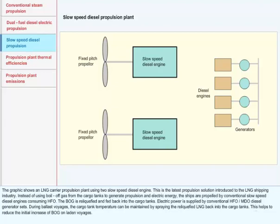Electric power is supplied by conventional HFO or MDO diesel generator sets. During ballast voyages, the cargo tank temperature can be maintained by spraying the reliquified LNG back into the cargo tanks. This helps to reduce the initial increase of BOG on laden voyages.